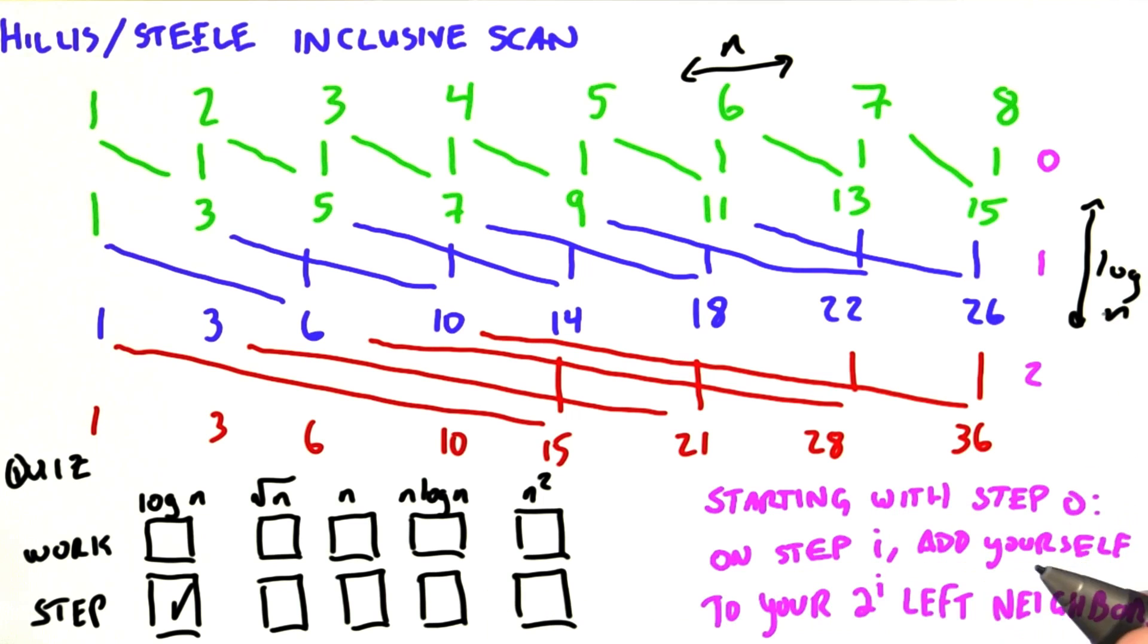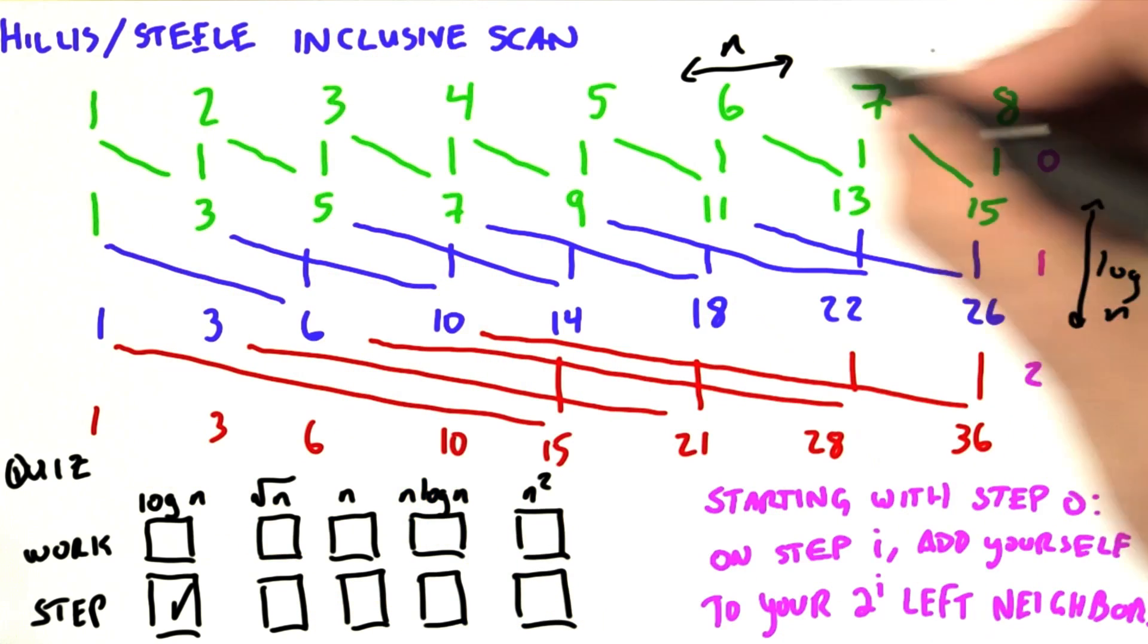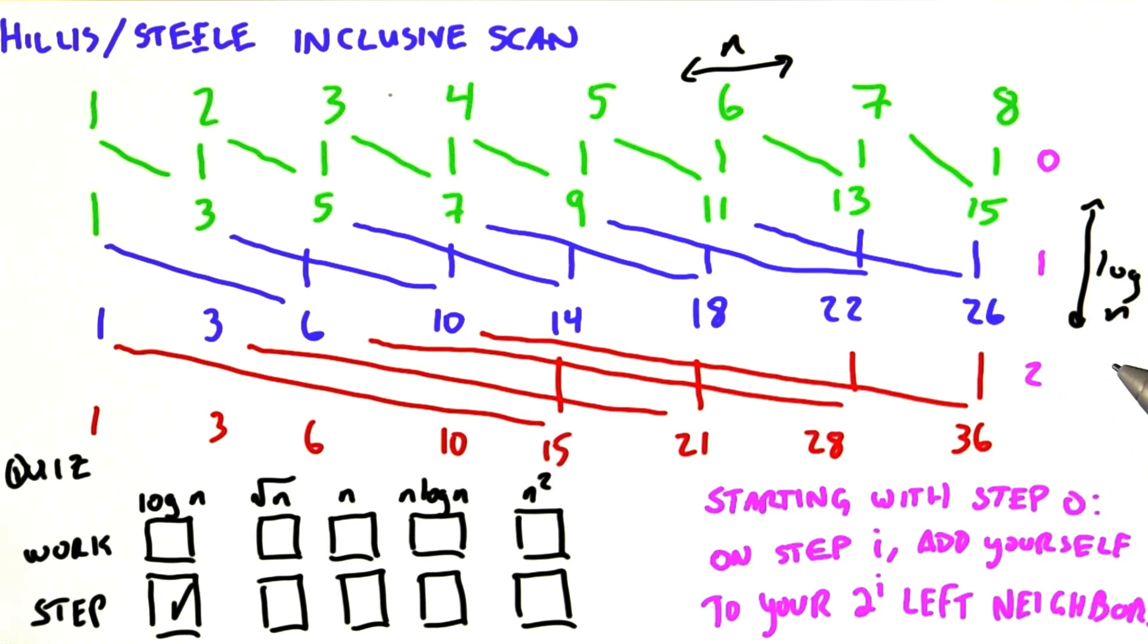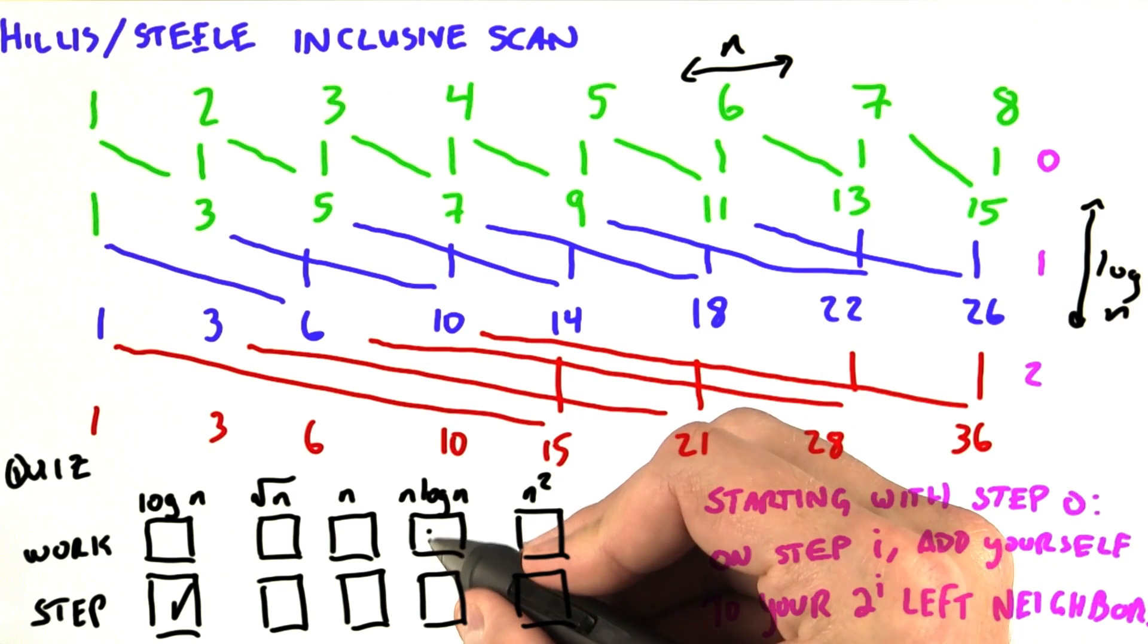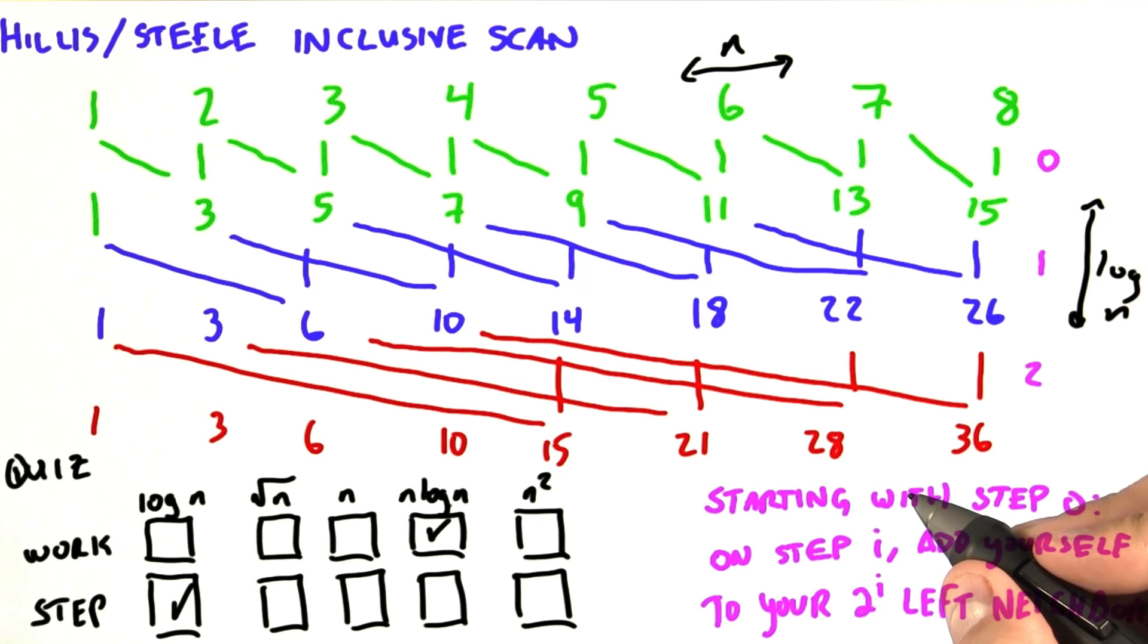That's log of n, the number of steps that we have. So the product of those two is going to give us the work complexity. And so the work complexity here is order of n log n.